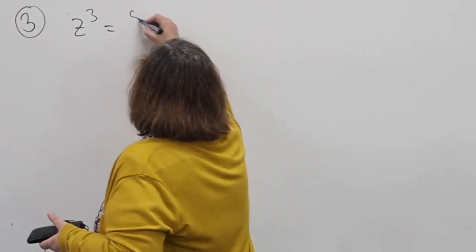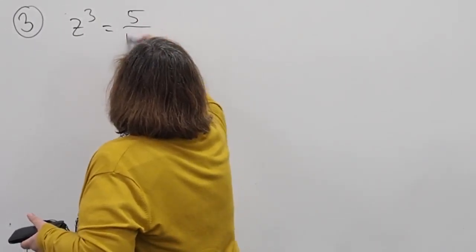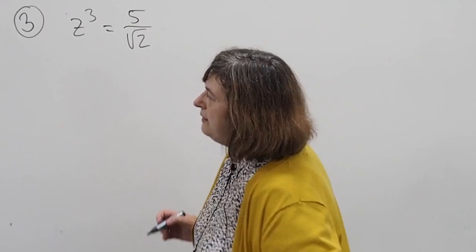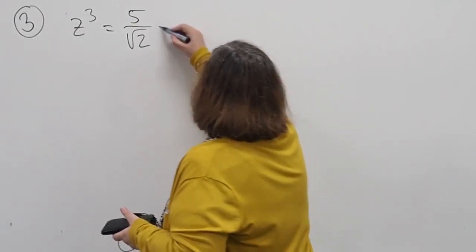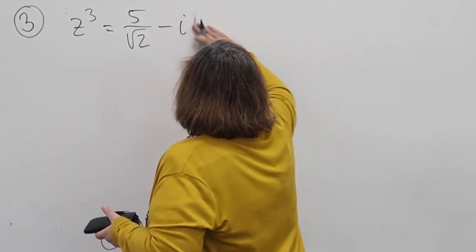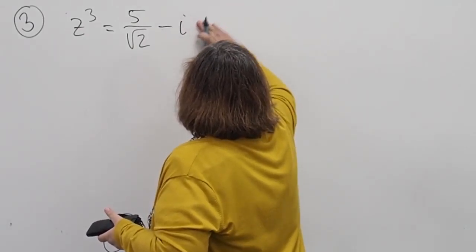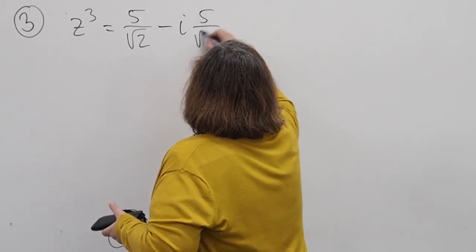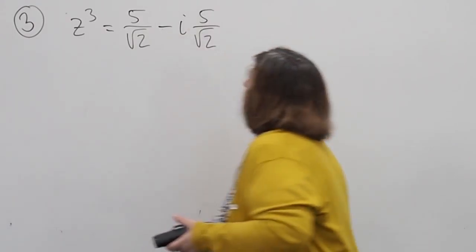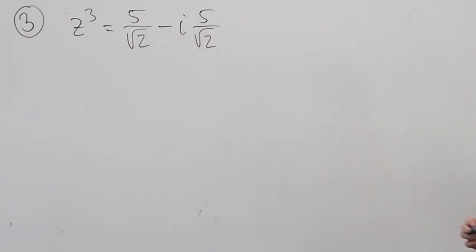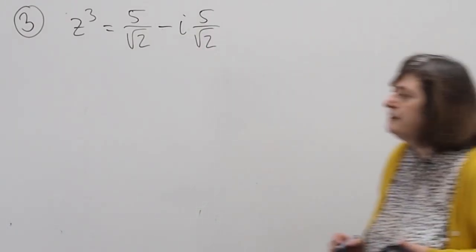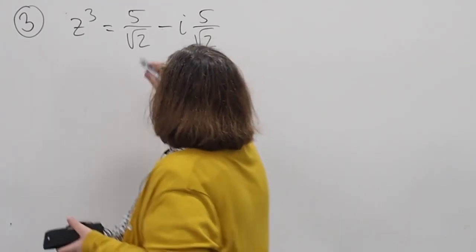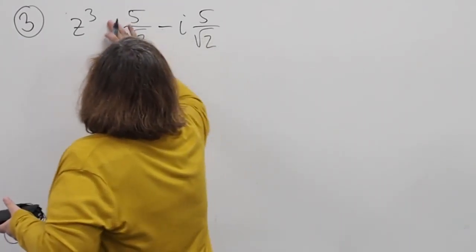The result equals 5 over square root 2, minus i times square root 2. That is minus the sum — so it's minus.